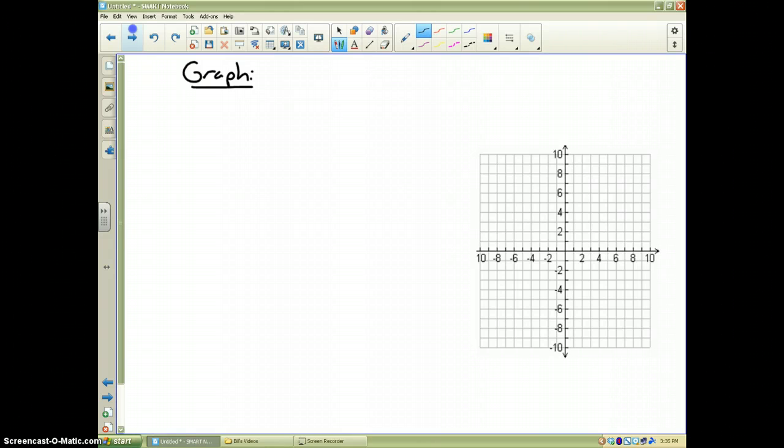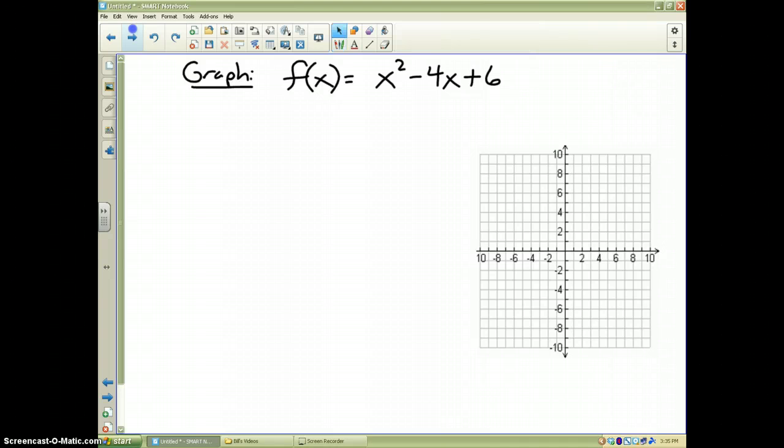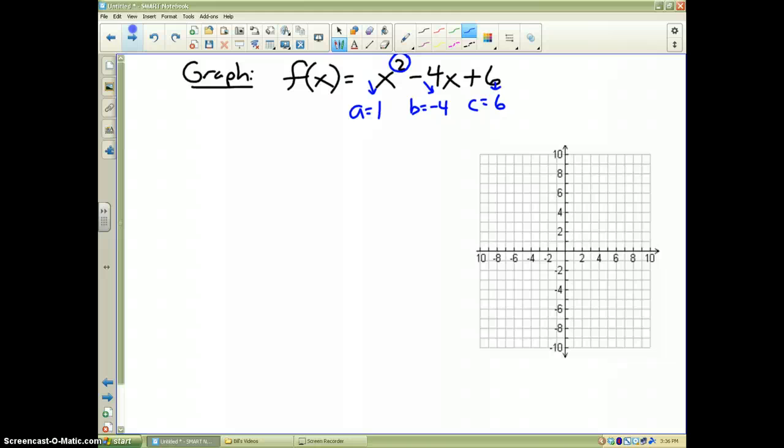Alright, here's our problem. I want to graph f of x equals x squared minus 4x plus 6. First of all, I notice it's squared. Therefore, it's going to make a parabola. And the next thing I do is I make note of what the values a, b, and c are. A is 1, which is right there. B is negative 4, which is right there. And c is equal to 6, which is right there.